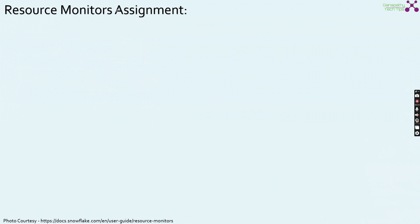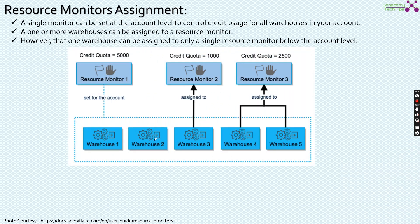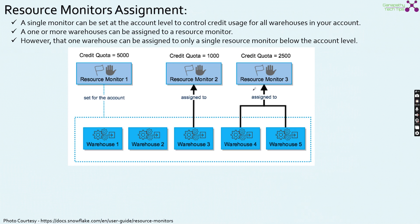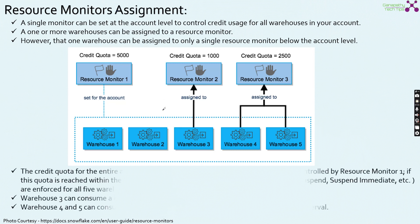We have a diagram from the Snowflake documentation. A single monitor can be set at the account level to control credit usage for all the warehouses in your account. One or more warehouses can be assigned to a resource monitor — in the diagram, Warehouse 4 and Warehouse 5 are assigned to resource monitor 3. But at one point in time, only one monitor is assigned to one warehouse; that one warehouse can be assigned to only a single resource monitor below the account level.